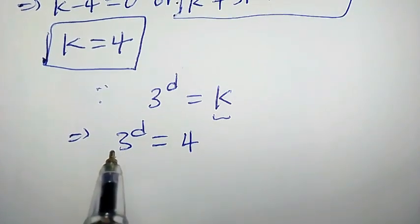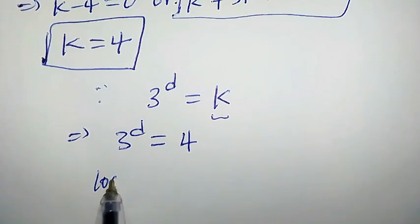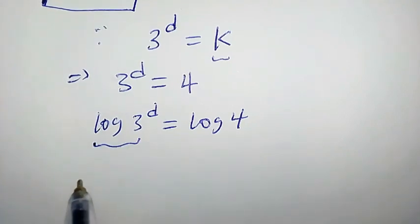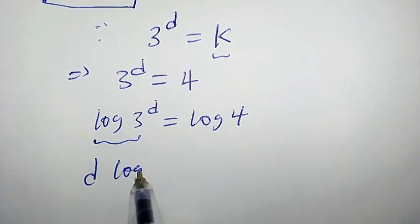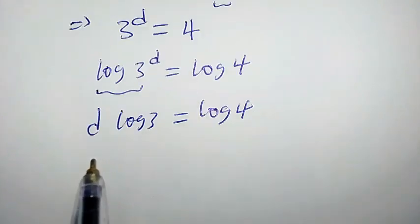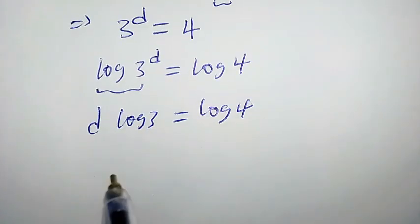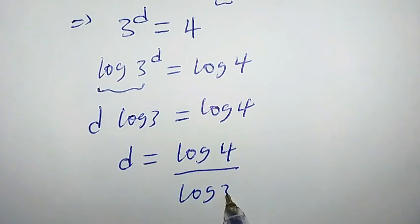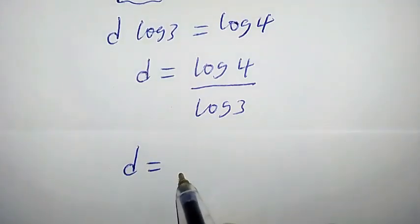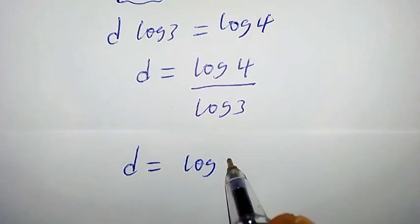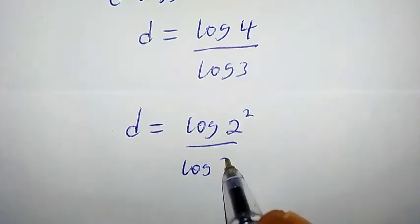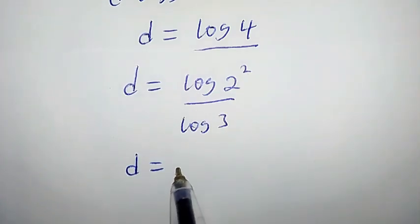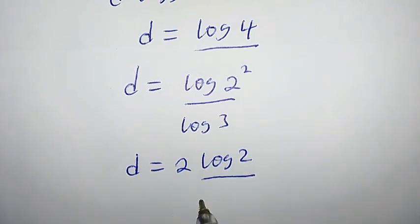Taking the natural logarithm of both sides: log of 3 to the power of d equals log of 4, which gives d times log 3 equals log 4. Dividing both sides by log 3, we get d equals log 4 over log 3. Since 4 equals 2 squared, this becomes d equals log of 2 squared over log 3, which equals 2 times log 2 over log 3. This is the required solution.